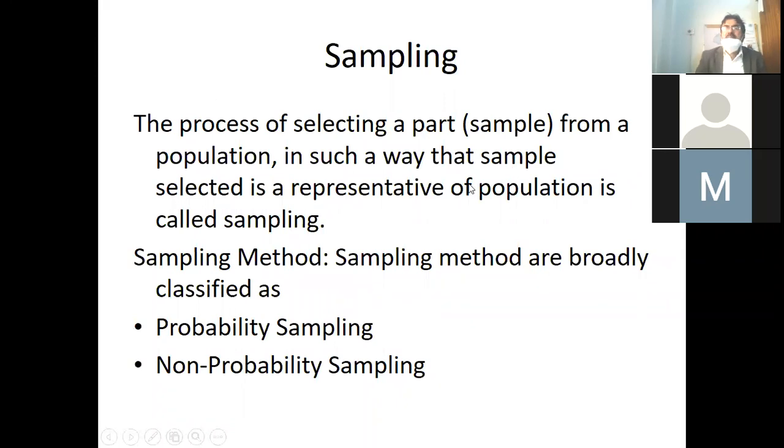The process of selecting a sample from a population in such a way that the sample selected is representative of the population is called sampling. Sampling methods are broadly classified as probability and non-probability sampling.